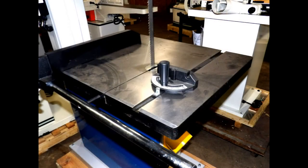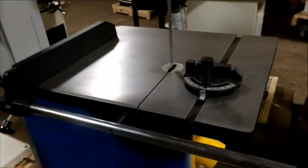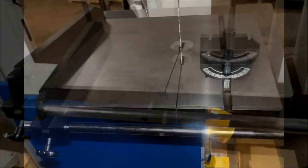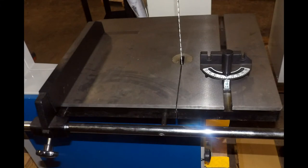The precision ground cast-iron table is 20 x 28 inches. It tilts 45 degrees with positive stops at 45 and 90 degrees for precise angle cuts.